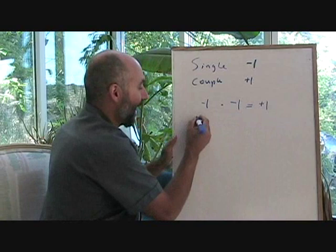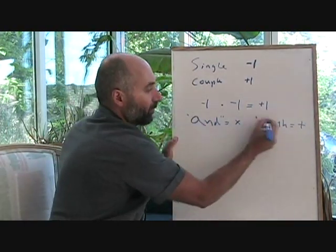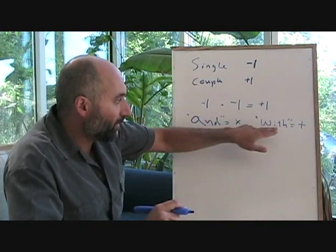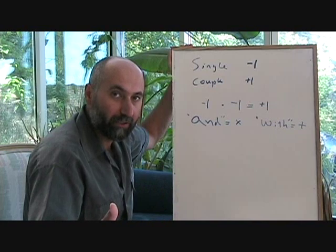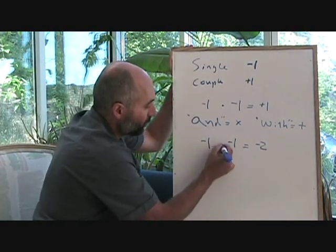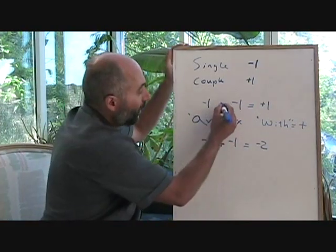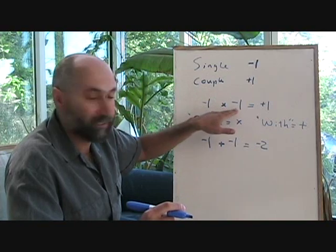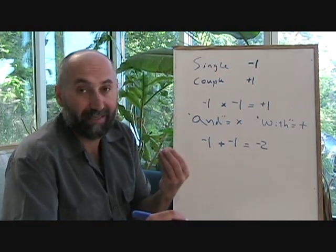'With' in general means addition. So 'and' equals multiplication and 'with' equals addition. We sort of proved to ourselves that two single people merging, a negative and a negative, equals a positive. If we use the 'with' statement, this also is consistent. Two single people go to a party - one single person comes with another single person - then you have two single people. So for both operations, multiplication and addition, the 'and' statement and the 'with' statement: a single and single makes a couple; single with a single makes two singles.